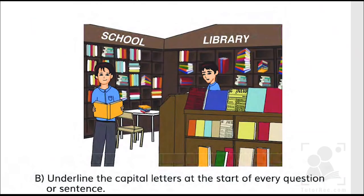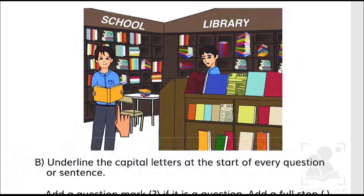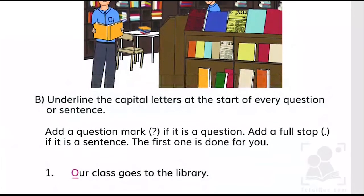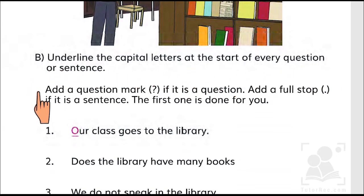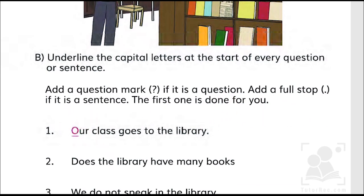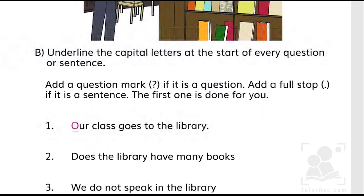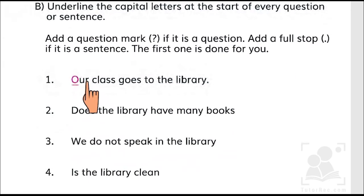On the second page of this unit, we have a school and its library. Exercise B says: underline the capital letters at the start of every question or sentence, add a question mark if it is a question, and add a full stop if it is a sentence. Let's start. 'Our class goes to the library.' — full stop, because this is a sentence.